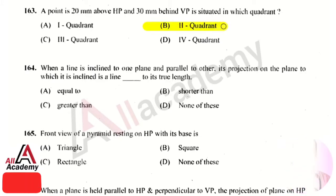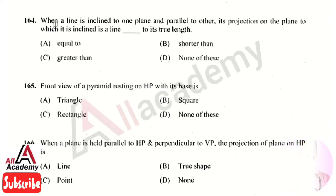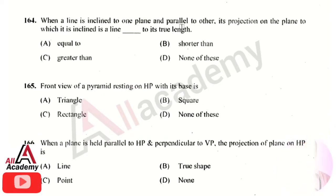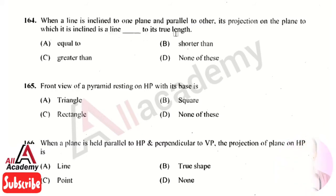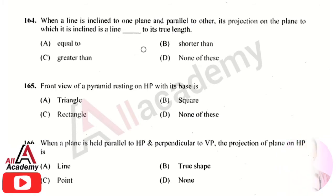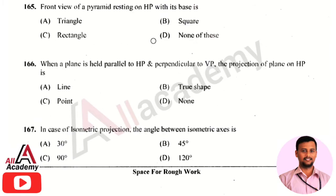The next question is: when a line is inclined to one plane and parallel to the other, its projection on the plane to which it is inclined is a line dash to its true length. The right answer is option 2 — it is shorter than its true length.